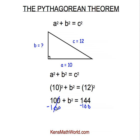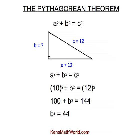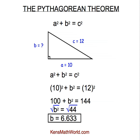On this side, the 100s cancel, and we're left with B squared equals 44 because 144 minus 100 is 44. Now we're ready to take the square root of both sides, and we'll have B by itself. The square root of 44 is 6.633. You can do that on a calculator. So now we know that the length of side B is approximately 6.6.